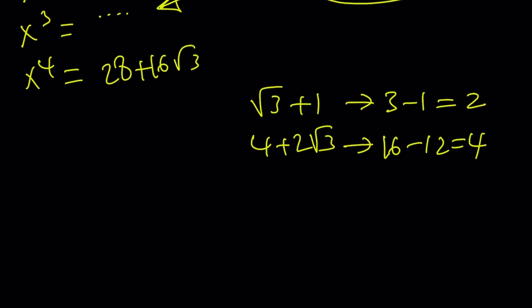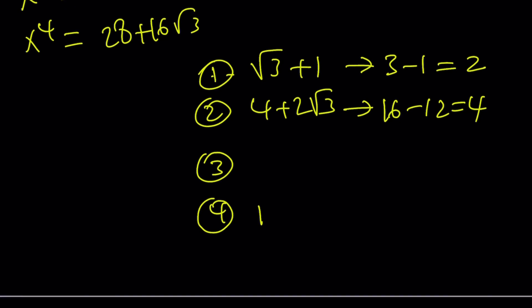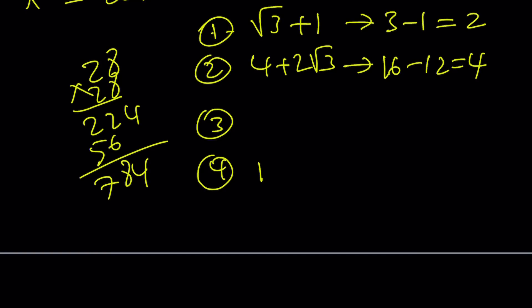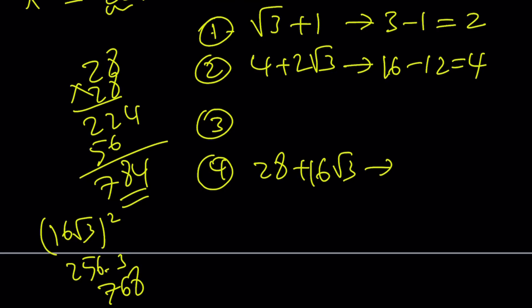I'm going to skip the 3rd power because I don't have it. But the 4th power, 1st, 2nd, 3rd will skip and we'll do the 4th. I'm not sure which one is larger so I'm going to have to square. I don't know 28 squared by heart so I'm just going to do it. It's going to be 224 and 56 and 784. And 16 root 3 squared is going to be 256 times 3, which is 768. 28 squared is 784 minus 768, and that's equal to 16.